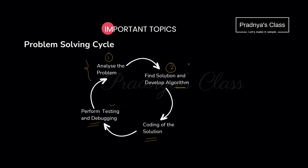By following these simple steps, we will solve any problem. Programming languages are used to solve real world problems. First we need to understand or analyze the problem properly by understanding the requirement. Then we will write the algorithm or draw the flowchart so that the solution will be clear. The third step is to write the code. And finally, we need to test that code. With the testing itself, we will come to know whether we are able to solve that problem properly or not.